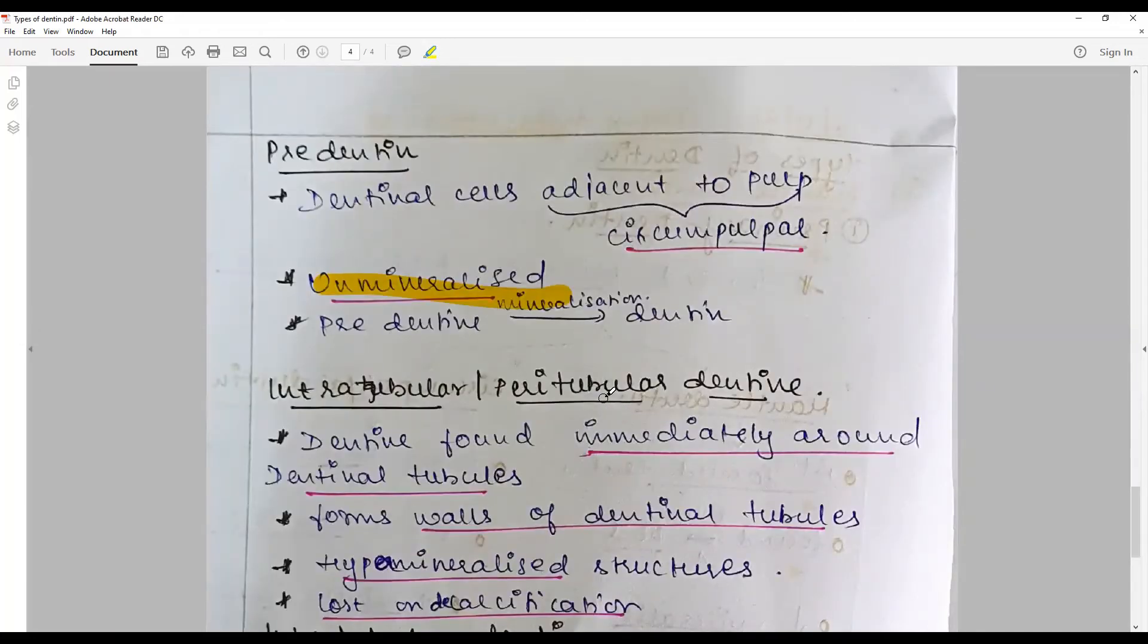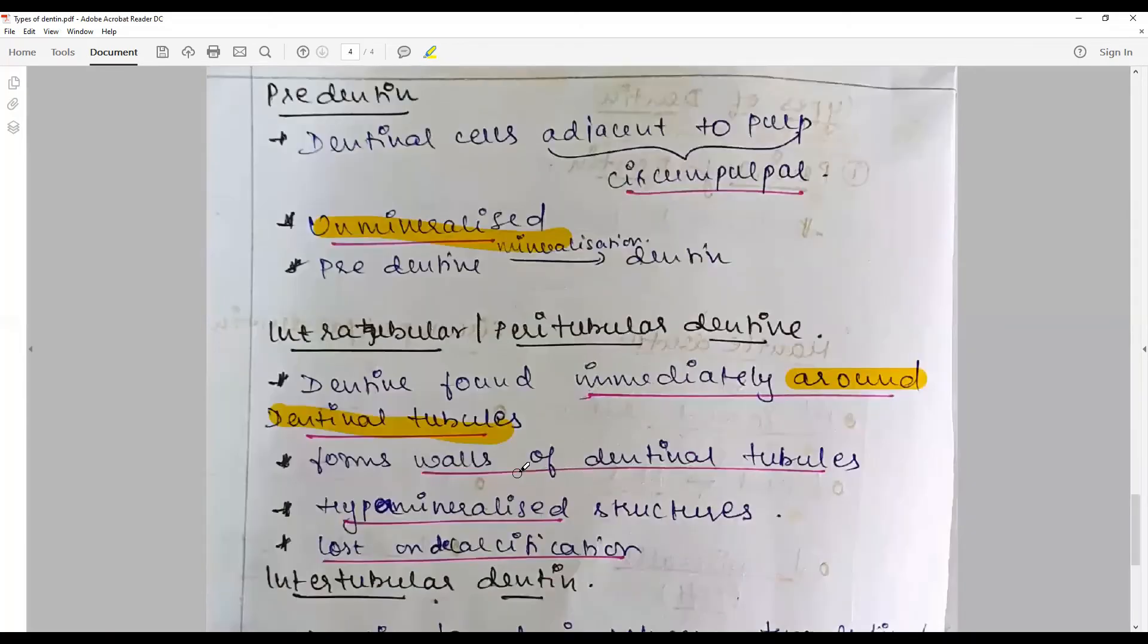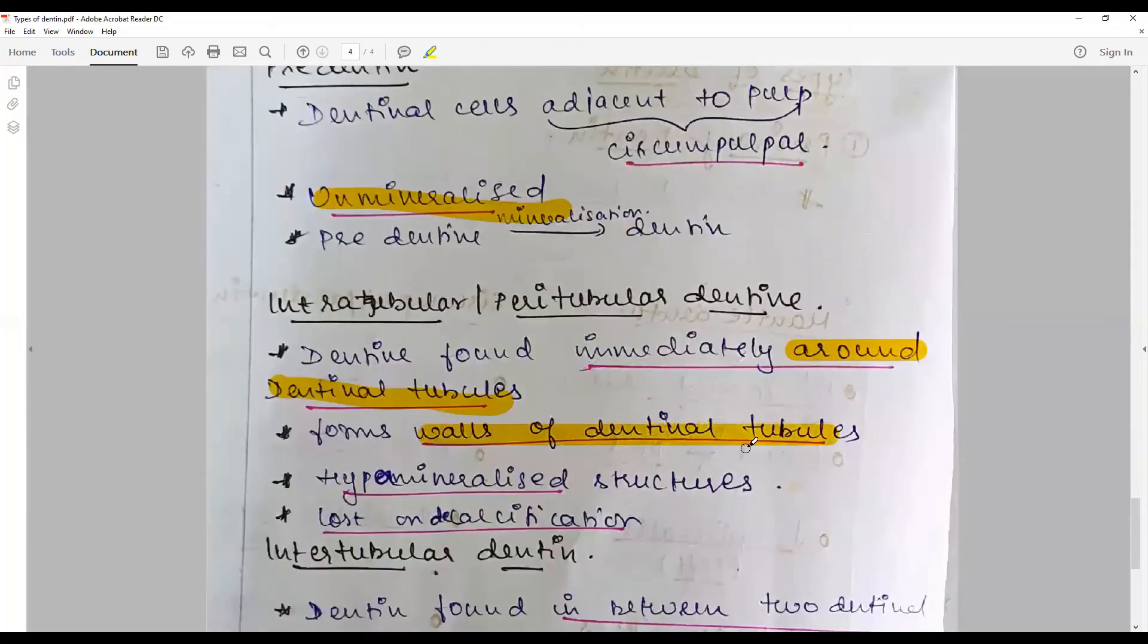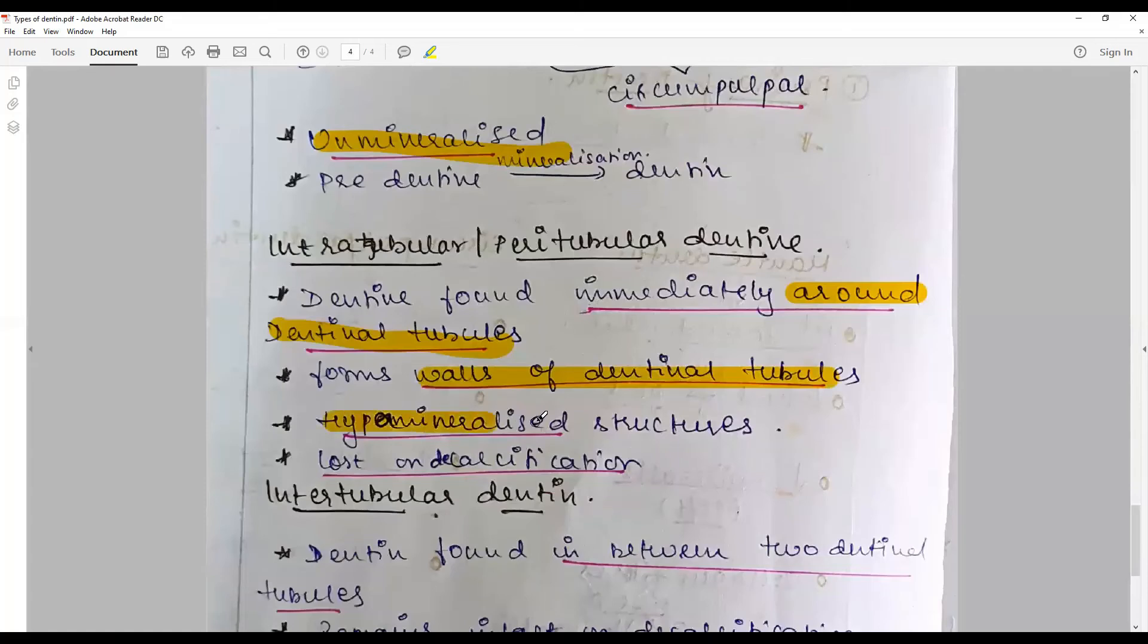Peritubular around the dentinal tubules, immediately around the dentinal tubules, forms literally the walls of the dentinal tubules. They are hypermineralized structures. Most importantly, they are lost in decalcification.